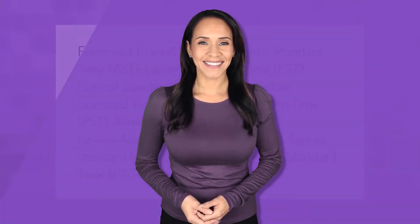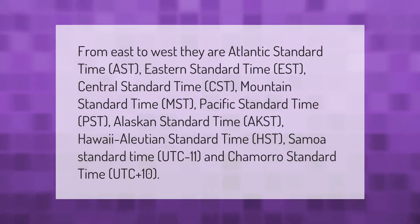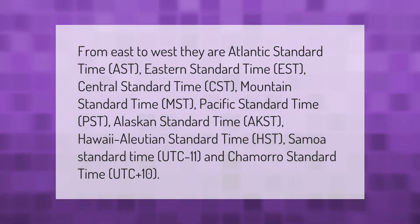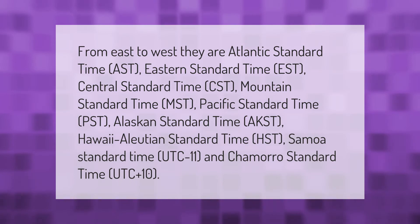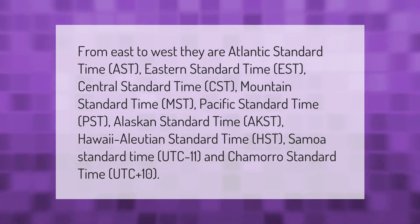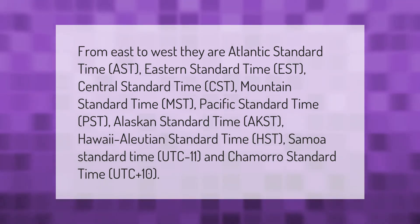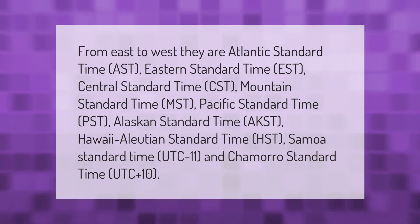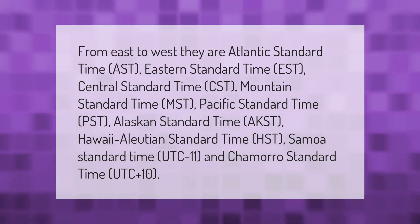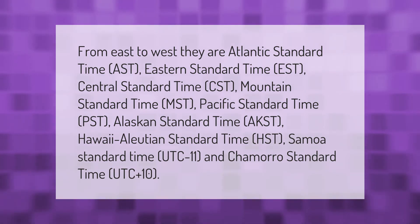From east to west, the US time zones are: Atlantic Standard Time (AST), Eastern Standard Time (EST), Central Standard Time (CST), Mountain Standard Time (MST), Pacific Standard Time (PST), Alaskan Standard Time (AKST), Hawaii-Aleutian Standard Time (HST), Samoa Standard Time (UTC-11), and Chamorro Standard Time (UTC+10).